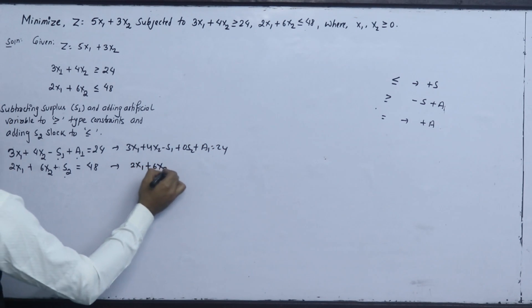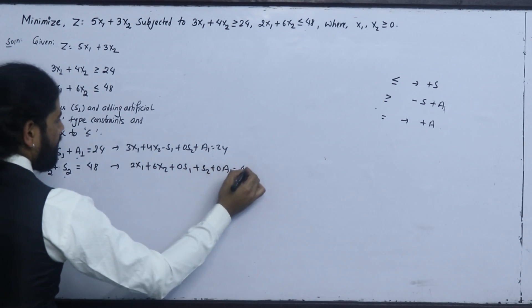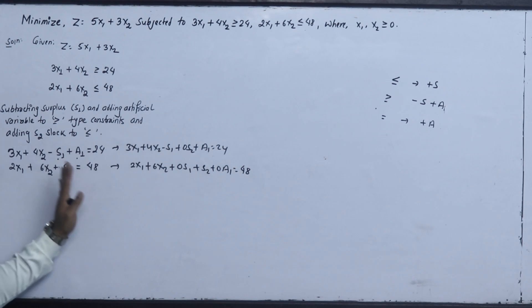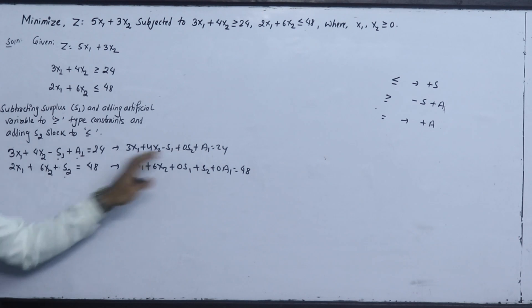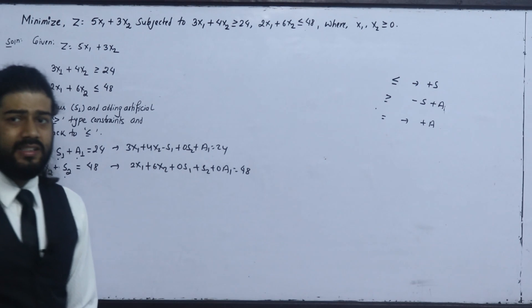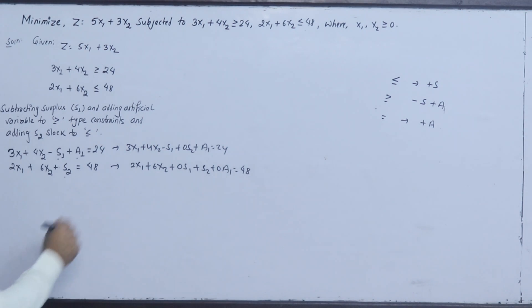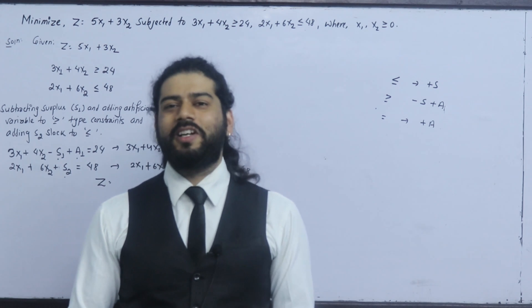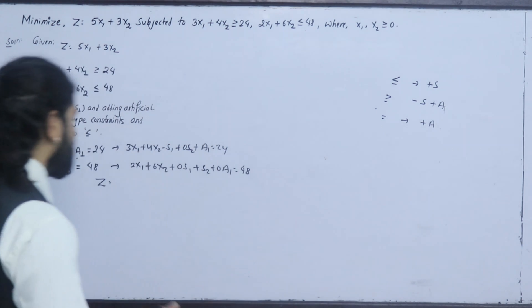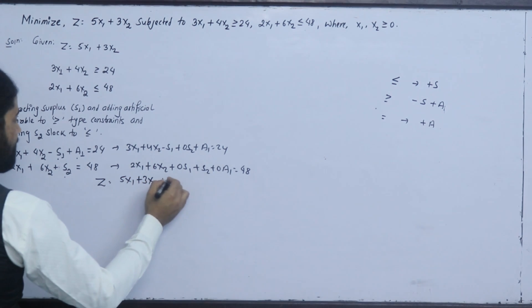The second constraint in standard form becomes: 2x1 plus 6x2 plus 0s1 plus s2 plus 0a1 equals 48. In z, we have 5x1 plus 3x2 plus 0s1 plus 0s2.